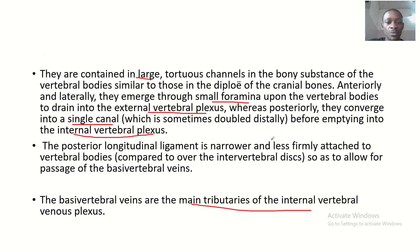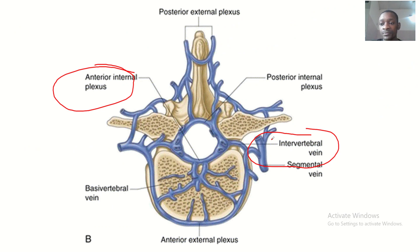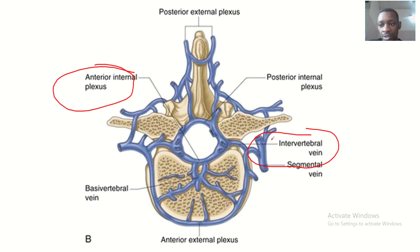To summarize: the basivertebral venous plexus is located in and around your vertebral bones. It drains anteriorly into the anterior external plexus and posteriorly into the posterior external plexus. The clinical importance is the spread of infections and cancers, because these veins are valveless and allow backward flow. That's it — see you guys in the next tutorial!